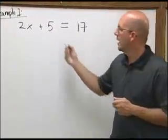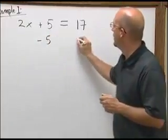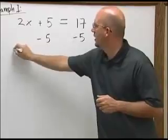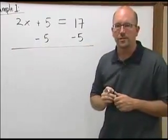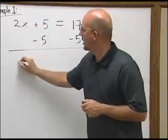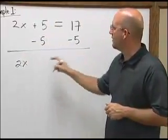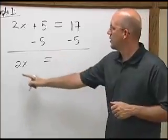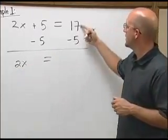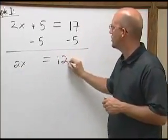So to undo the plus 5, I will subtract 5, and I must do it from both sides. The 2x remains. 5 minus the 5 gets rid of that. And so now our 2 times x equals 17 minus 5, which is 12.